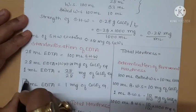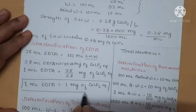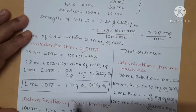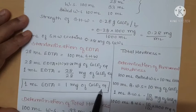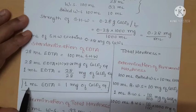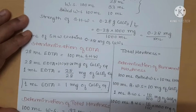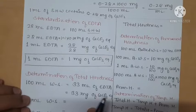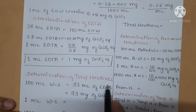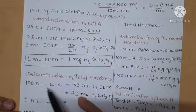So finally, 1 ml of EDTA is equivalent to 1 mg of CaCO3. This is the standardization of EDTA. Now we have to determine the total hardness of the given water sample.